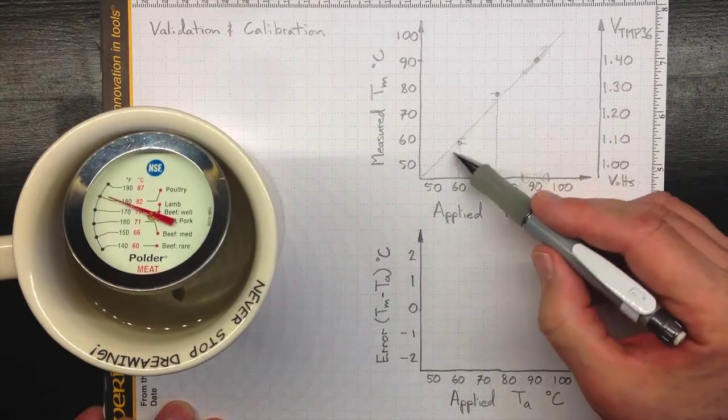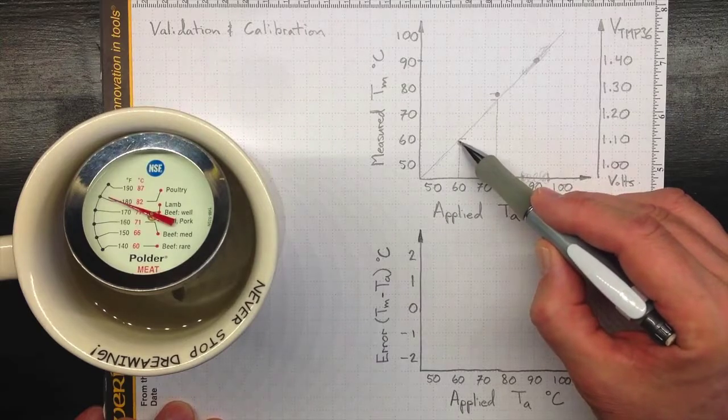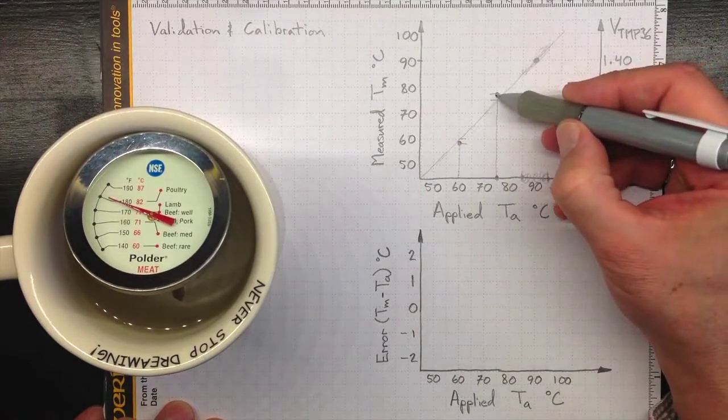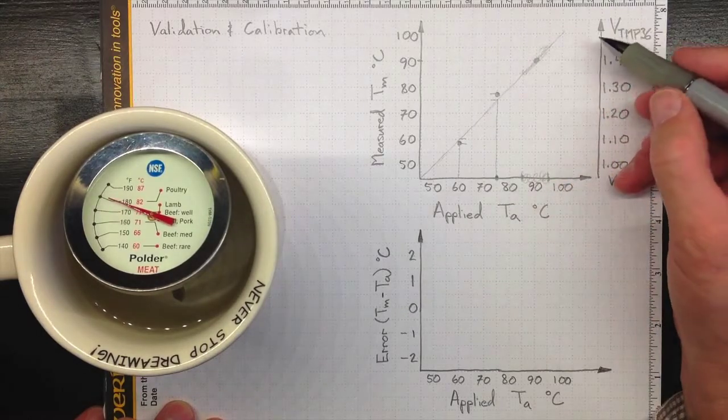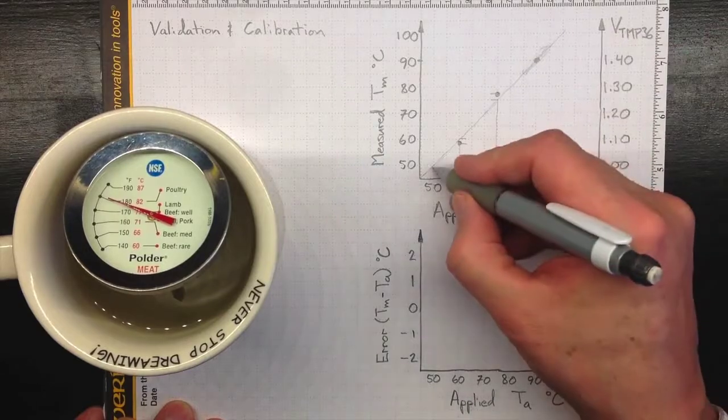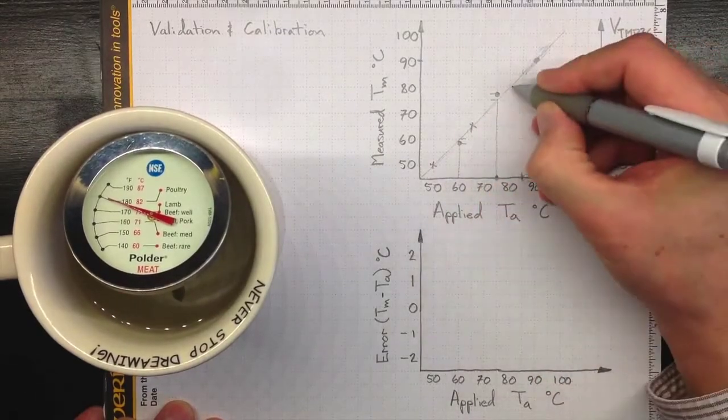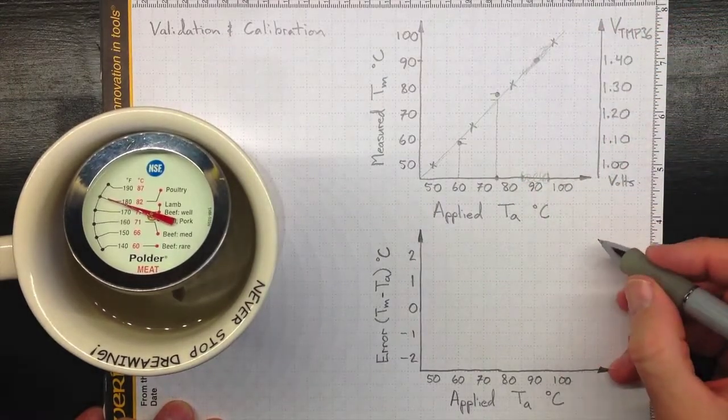Now, in most cases, if your instrumentation is any good, you won't really see these errors when you draw a graph like that. That would be an error of, say, 2.5 degrees Celsius. That's a pretty big error in your measurement system. So, more likely, your calibration relation will look something like this when you actually do the tests.